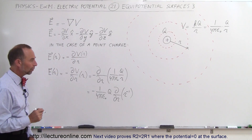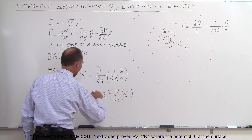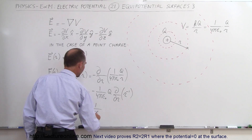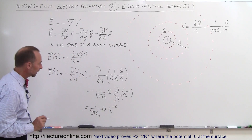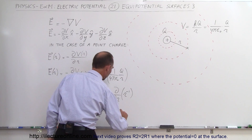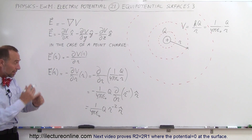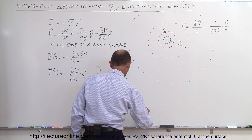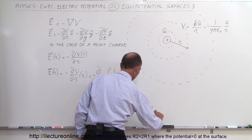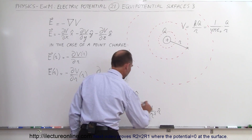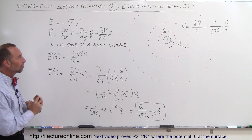The derivative of r^(−1) is found by bringing the exponent down and subtracting 1: we get −r^(−2). The two negatives combine to give a positive, so this equals +(1/(4πε₀)) × Q × r^(−2), with the unit vector r̂. Combining everything: E = Q/(4πε₀r²) r̂, which is the electric field around a small point charge at the center.